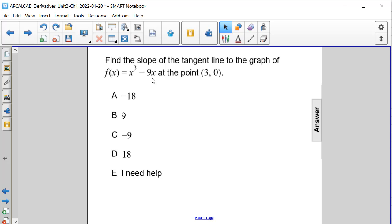Find the slope of the tangent line to the graph of the function f of x equals x cubed minus 9x at the point (3, 0).